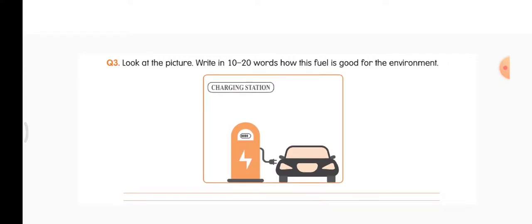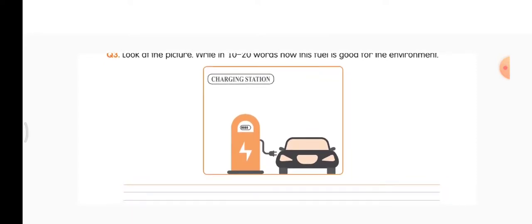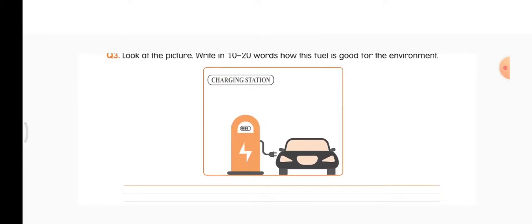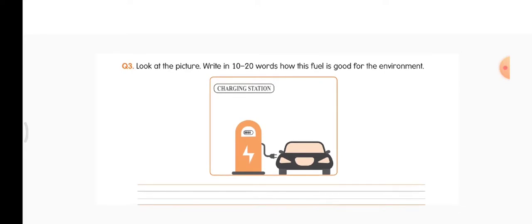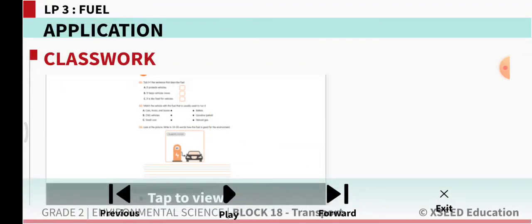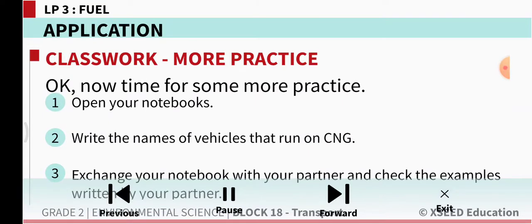Electricity is environmentally friendly because it doesn't release much smoke into the air. Petrol and diesel, when burned in vehicles, give out a lot of smoke and harmful gases. Electricity does not cause much air pollution. You can write two sentences like: 'Vehicles which run on electricity do not cause air pollution.'